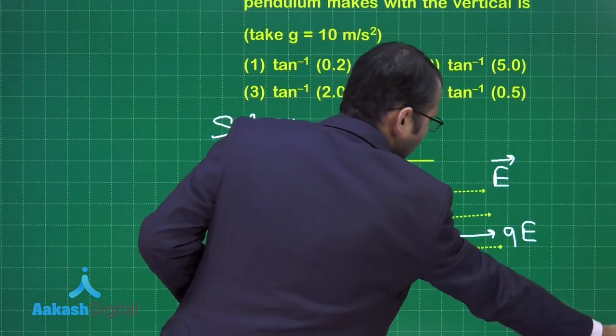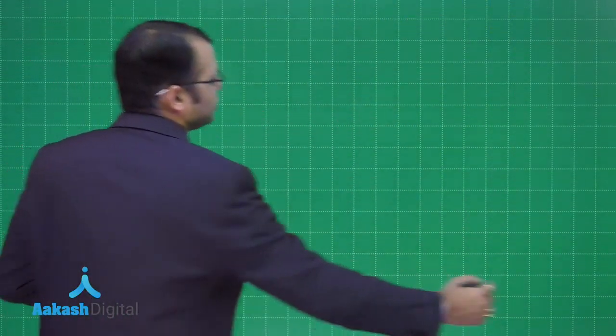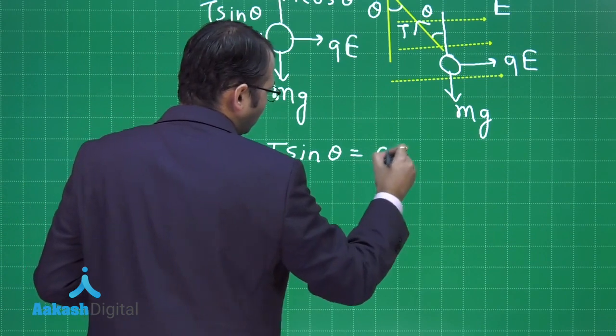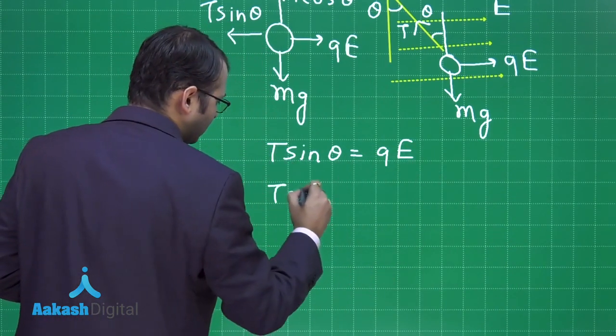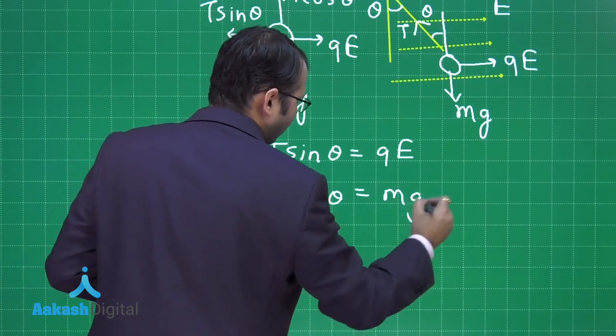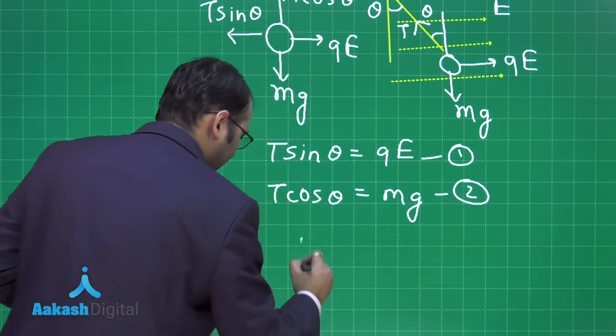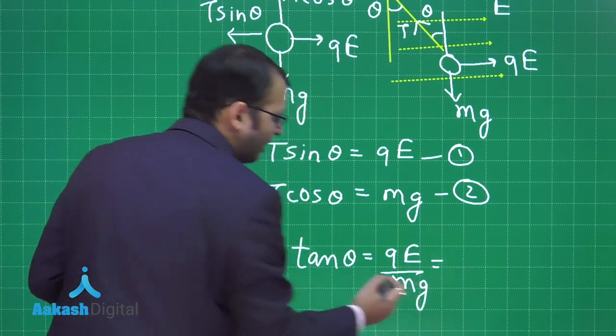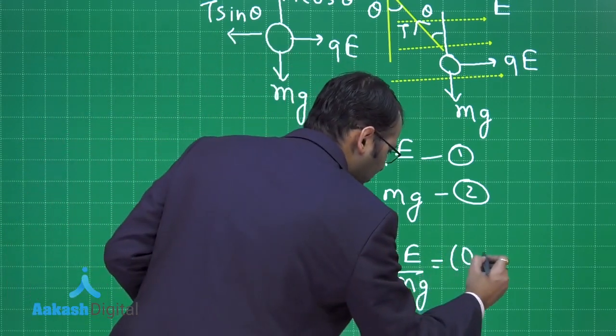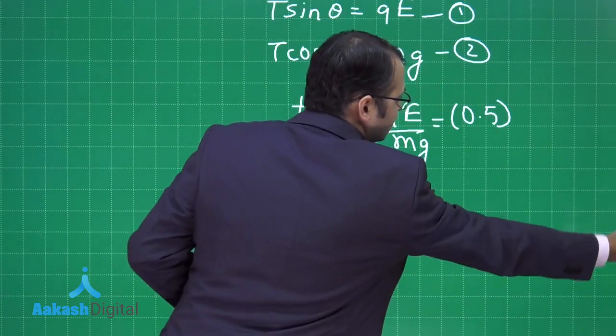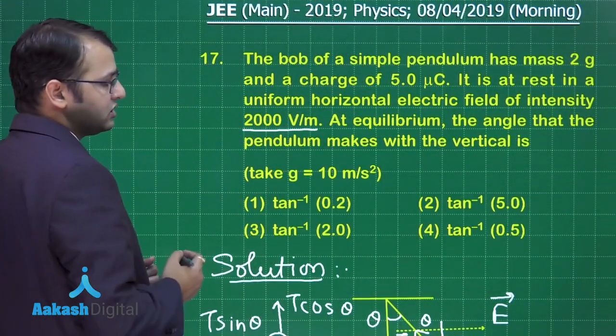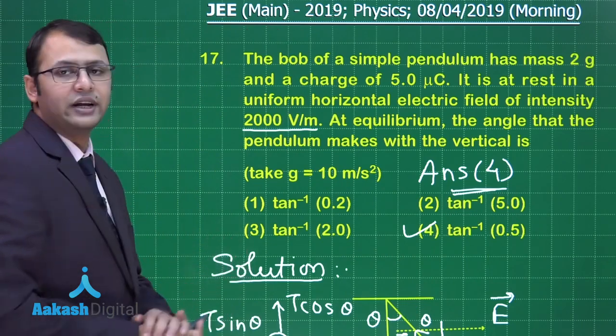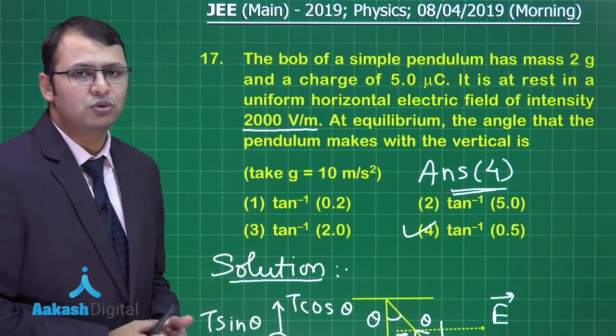So on solving this, you will get for equilibrium condition, you should understand that the net force on this should be 0. So T sine theta should be equal to QE and T cos theta should be equal to Mg. Dividing these two, you will get tan theta is equal to Q into E by Mg. When you put down the values which is given to you, you will simply get 0.5. So let's see which is the best suited option here. Among the four options which is given to us, theta would be tan inverse of 0.5, that is option number 4. Hope you have understood this one. Now it's time to move on to our next question.